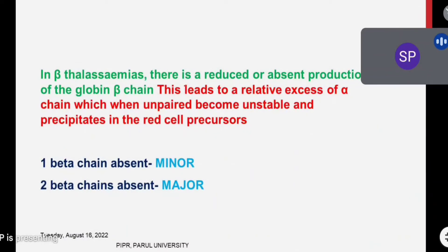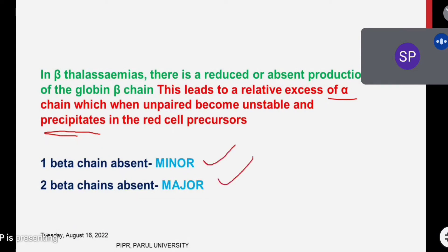In beta thalassemia, there is reduced or absent production of one or both beta chains, leading to a relative excess of alpha chains. These excess alpha chains are unstable and precipitate the red cell precursors, causing dysfunction of the total RBC. In beta thalassemia minor, one beta chain is absent; in major, both beta chains are absent. This is the basic pathophysiology.